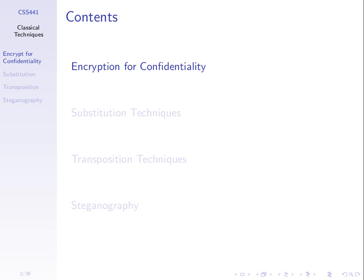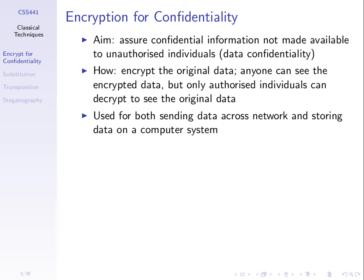To do that, we need to understand what encryption does. We want to make sure that confidential information is not made available to unauthorized individuals — we want to make it available to some people, but others cannot access it. There's no use encrypting something such that no one can ever read it again. We need to encrypt such that some people can read the contents, but others cannot.